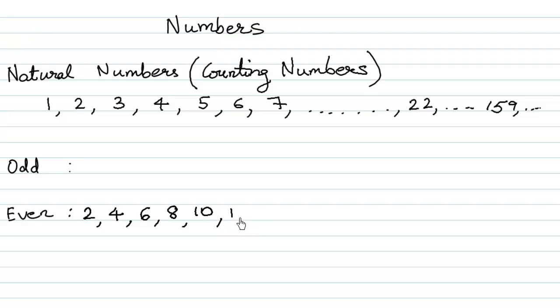2 sixes are 12, 2 sevens are 14, 2 eights are 16, 2 nines are 18, 2 tens are 20, 2 elevens are 22, and all the numbers that are divisible by 2, that come in the table of 2, are said to be even numbers because they have proper pairs.